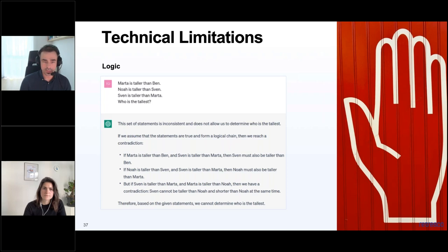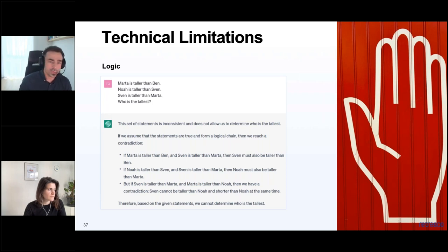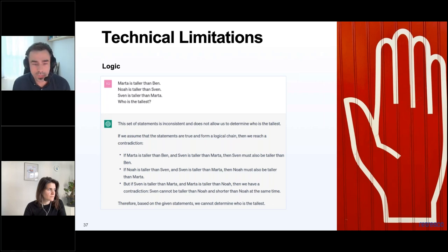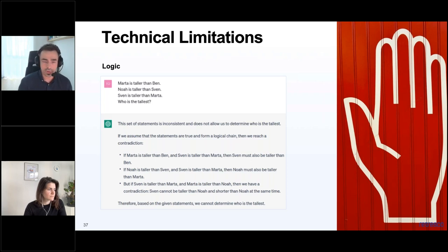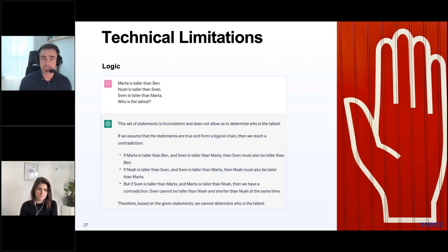Another technical limitation is logic. If given a riddle — 'Marta is taller than Ben, Noah is taller than Sven, Sven is taller than Marta, who is the tallest?' — you can derive that Noah is the tallest. However, this is not an easy task for a language model, because predicting token by token is not a good approach to solving logical riddles. ChatGPT incorrectly says the information is inconsistent and doesn't allow determining who is tallest. Similarly, if 12 musicians perform a piece in 10 minutes, 24 musicians still take 10 minutes — not 5 — but ChatGPT falls into that trap. GPT-4 can sometimes correct itself if told it's wrong.